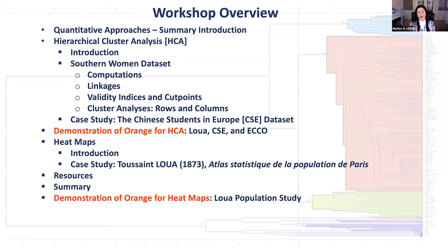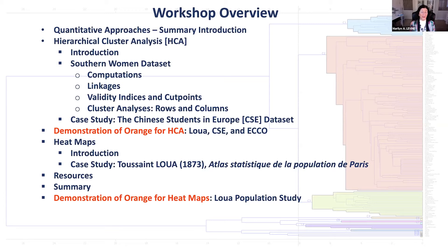I am dividing this into two parts so you have a chance to ask questions. We will have a demonstration of Orange, which is a very easy-to-use program for hierarchical cluster analysis. I will show some Chinese examples, and then use the Chinese students in Europe dataset as a case study after we do the southern women dataset. I think it is really important to consider what graphs mean and what you can extract from attributes and the quantitation of what you are doing.